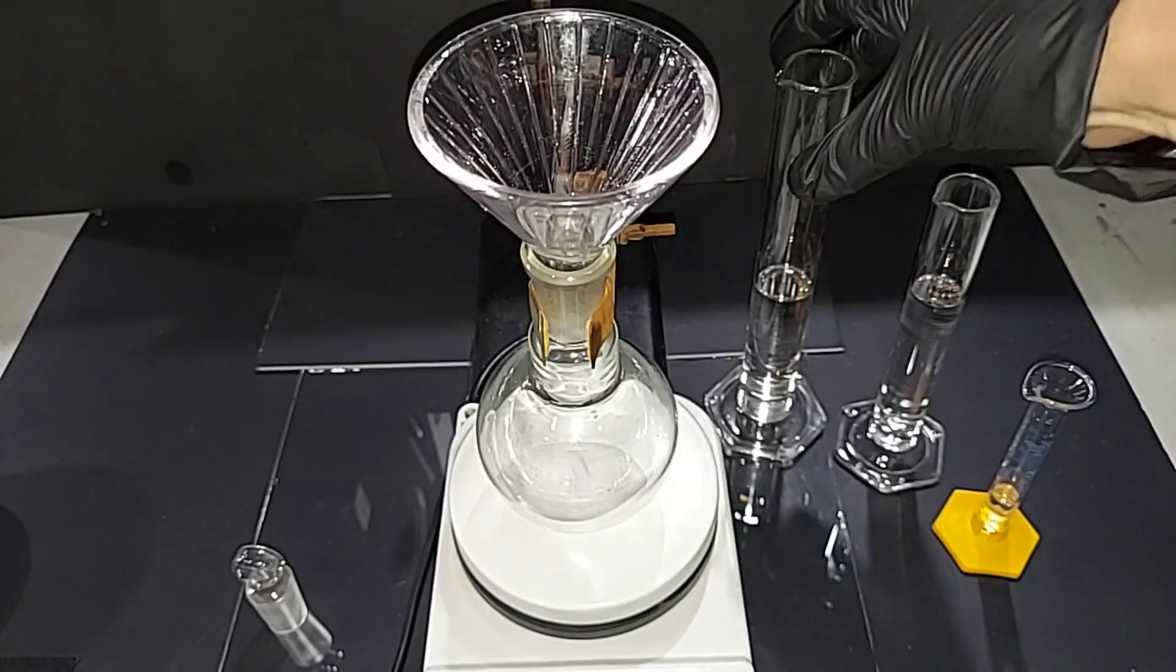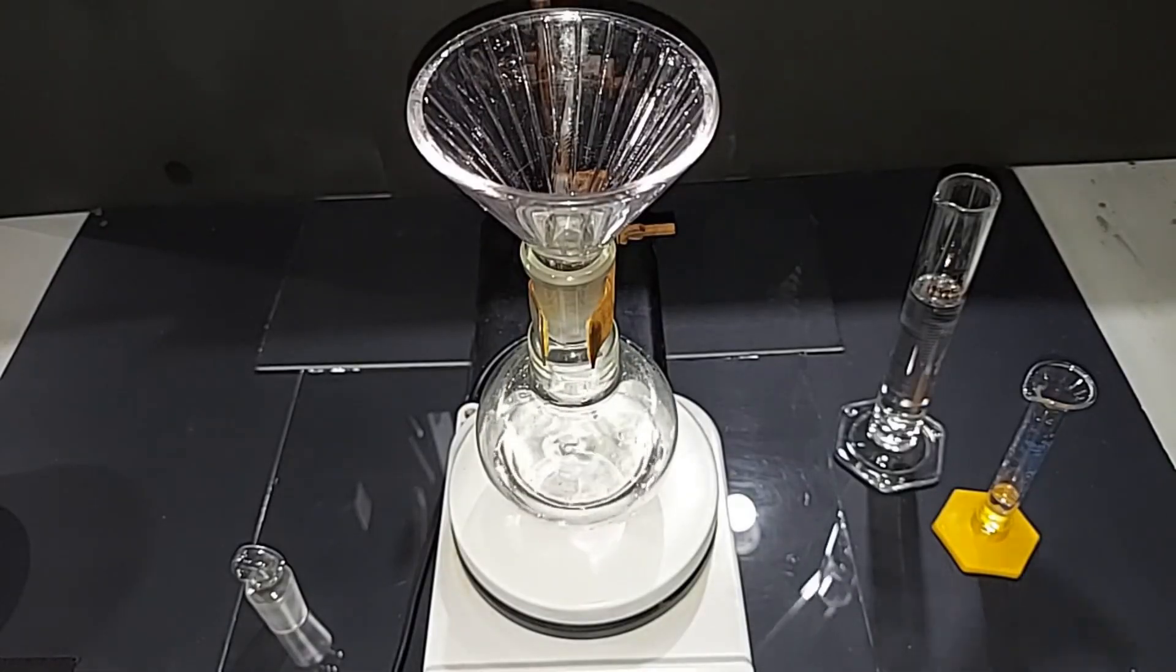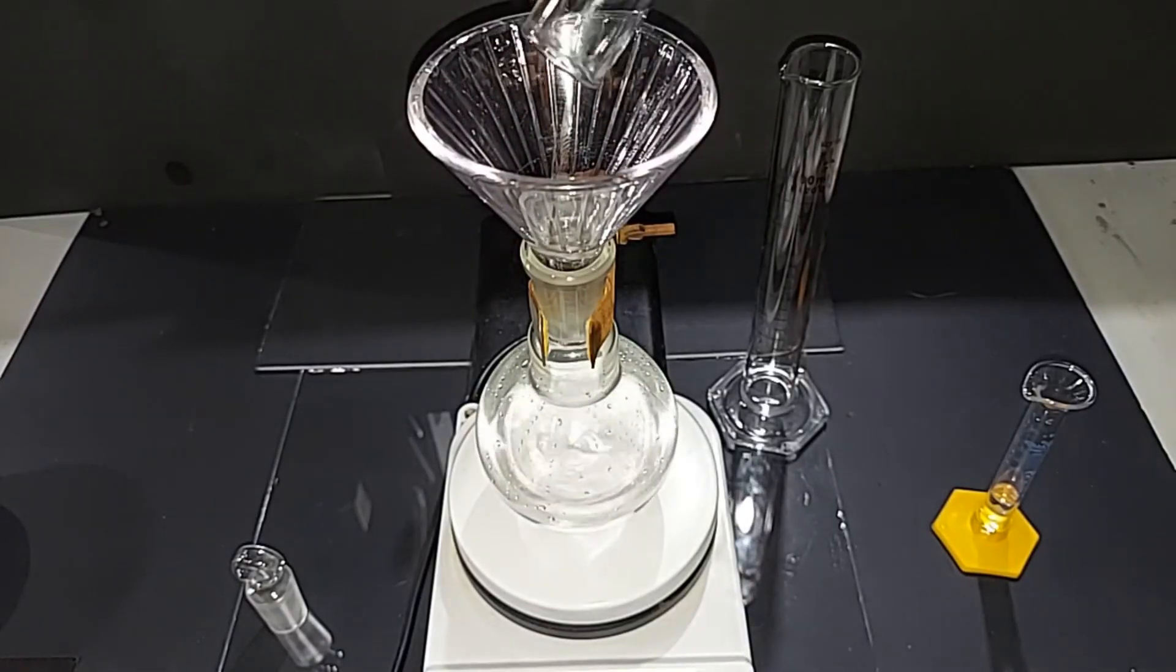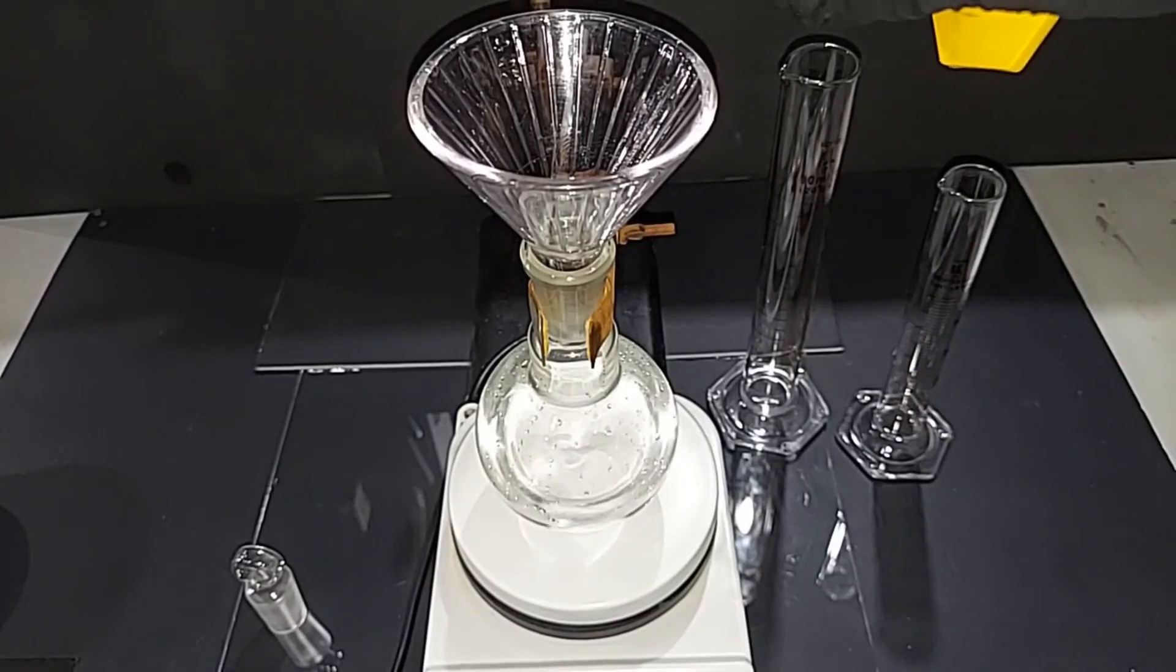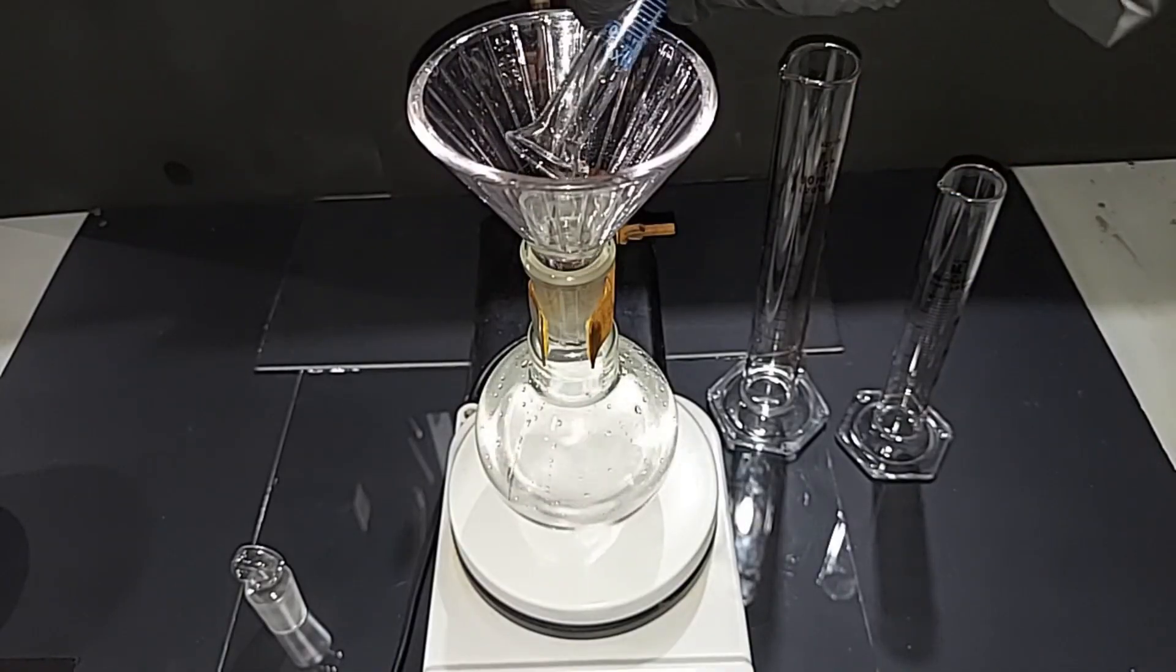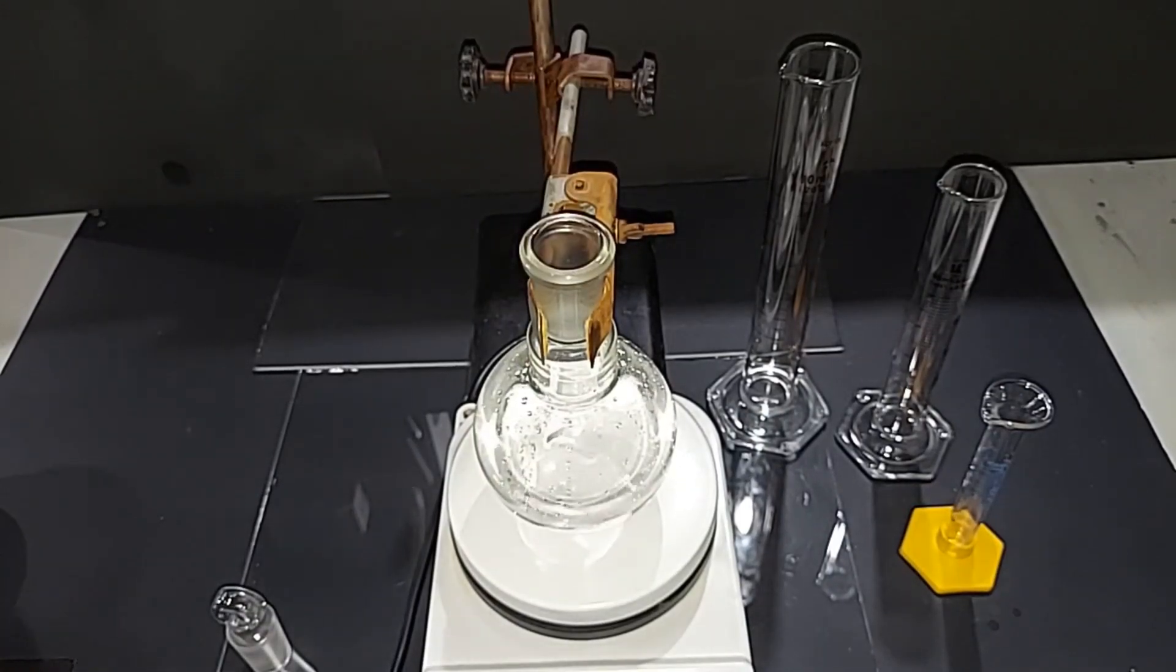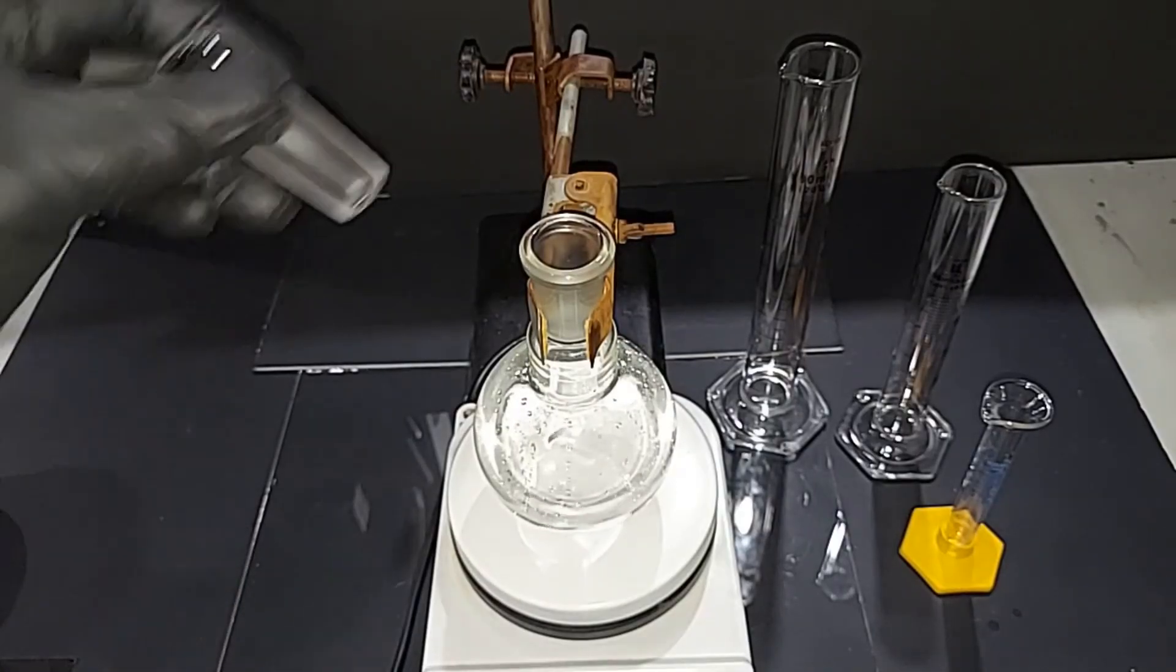I'm going to start the magnetic stirrer. First thing I'm going to add is the ethanol. Next, the glacial acetic acid. And lastly, and a little slower, the sulfuric acid. Lastly, I'm going to cap this, not because I'm going to leave it overnight, but it will take me a bit to set up the next step.